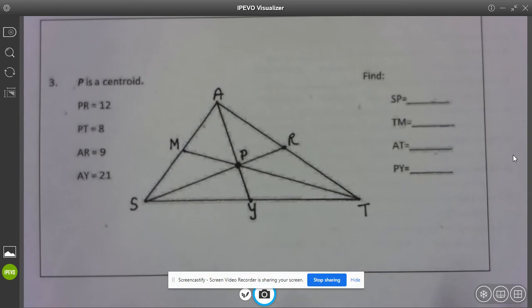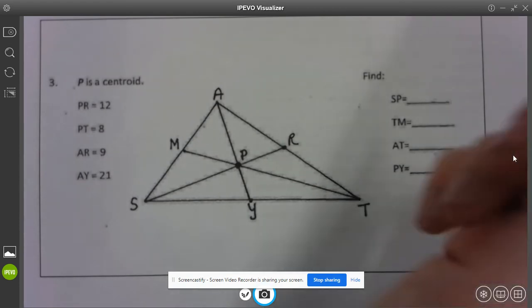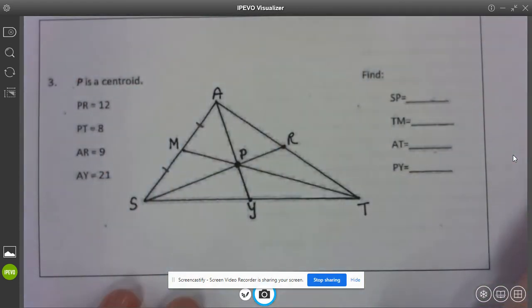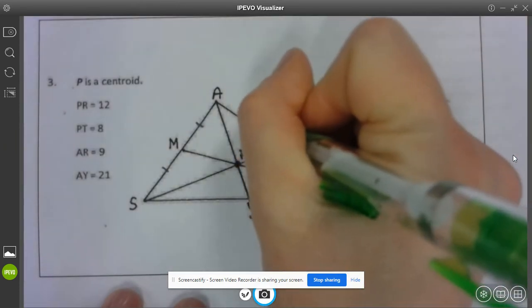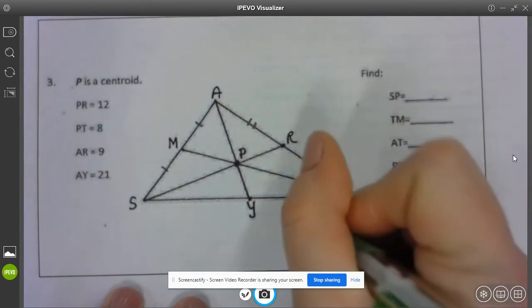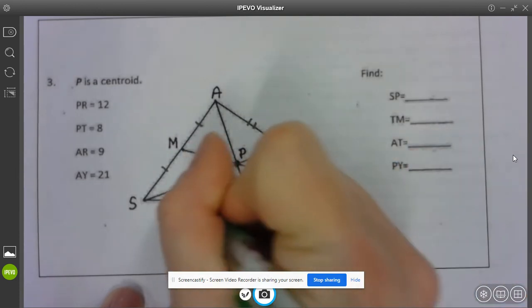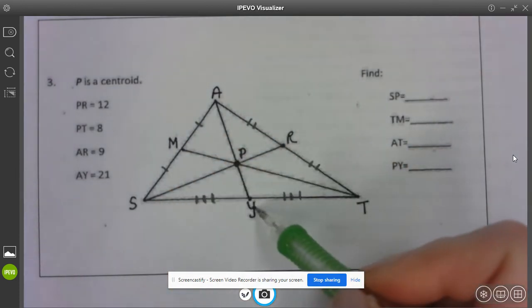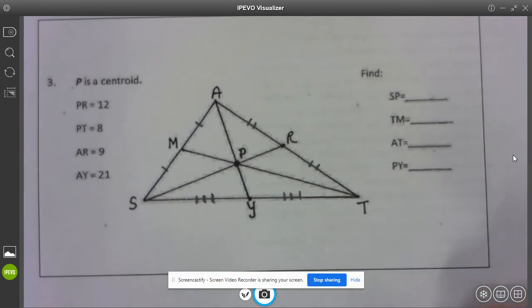Now we have a centroid, so that's a whole bunch of medians so that means all of these sides here on the outside are congruent because MR and Y are midpoints cutting those sides directly in half.